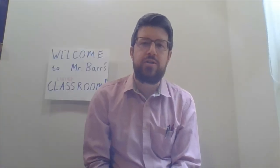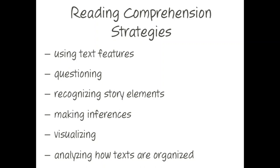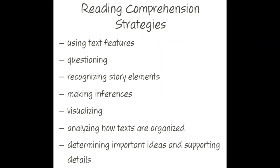Let's look now at our reading comprehension strategies chart. This shows you all the different strategies you can use to better understand a text that you're reading. We're going to add one today. Here are the reading comprehension strategies that you've been using so far this year in fifth grade: using text features, questioning, recognizing story elements, making inferences, visualizing, and analyzing how texts are organized. Now we're going to add one more — determining important ideas and supporting details — which is the skill that we've been working on today. Remember, if you can do this while you read, you're going to have a much better understanding of what the text is trying to tell you.